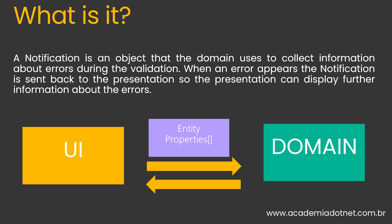So what is a notification? It's simply, in this demo, an object that the domain uses to collect information about errors during the validation of your entities. So instead of throwing errors in your domain logic, you could use an object to apply the notification pattern. When errors appear, the notification is sent back to the presentation layer.